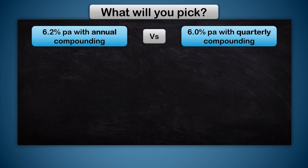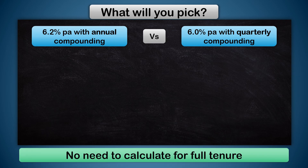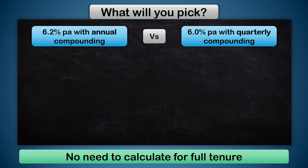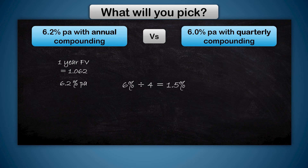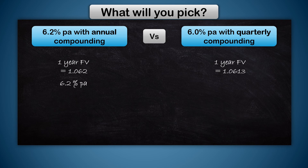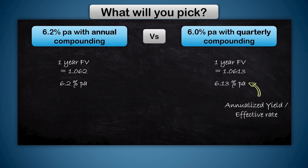But what if they are offering 6.2% with annual compounding versus 6% with quarterly compounding? Now it's tricky — you will have to calculate to see which one is better. For comparison, you can just calculate the one-year future value or the effective growth rate. 1.062 to the power 1 is 1.062 itself, which is 6.2% as it is. For the quarterly option, 6 ÷ 4 = 1.5% quarterly, so 1.015 to the power 4 = 1.0613. Converting back to percentage growth we get 6.13%. So the first option — 6.2% annual — is better. This 6.13% is called the annualized growth rate or effective yield.